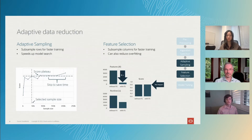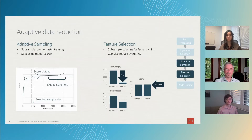Next, we do feature selection — the same idea, but trying to reduce the number of features in your dataset. This can not only improve the running time, but sometimes it even improves the accuracy of your model by reducing overfitting.